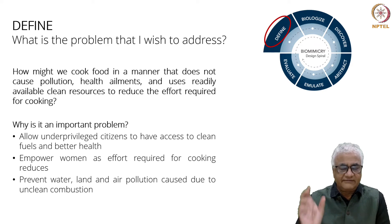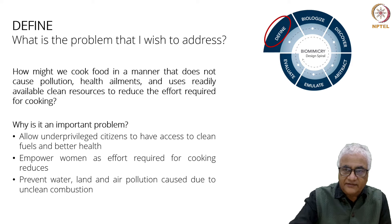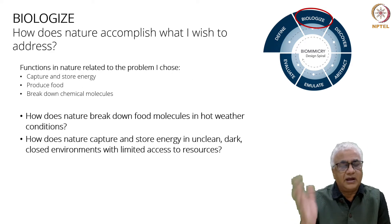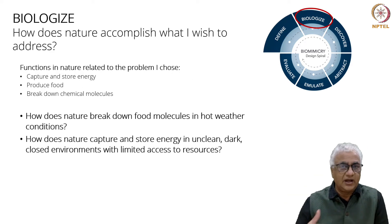Why is it an important problem for Ishan? Because he talks about all the emotional connects he has with the problem — about underprivileged citizens and empowering women. So now he has defined the problem. What does he do next? He does biologize.